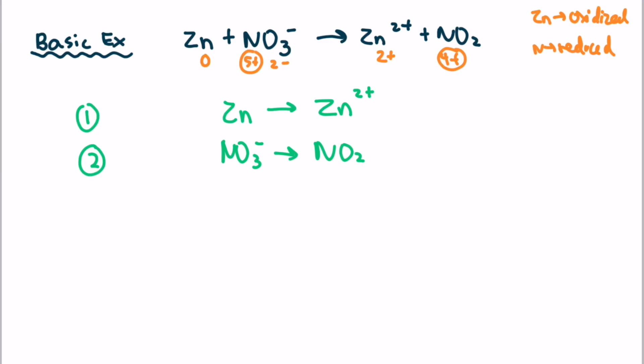Now that we have our two half-reactions, let's balance all of the elements except H and O, like step two. In equation one, zinc is all balanced — one to one ratio. In equation two, nitrogen is also balanced. Remember, we don't balance the oxygen here, even though it looks tempting, because we balance all elements except H and O first. So we're good with step number two. Now let's do step number three, where we balance all of the oxygens by adding H2O. On equation one, we don't have oxygen, so we're good. On equation two, we have three oxygens on the left and two oxygens on the right, so we add one H2O to the right side. Now we have three oxygens on both sides.